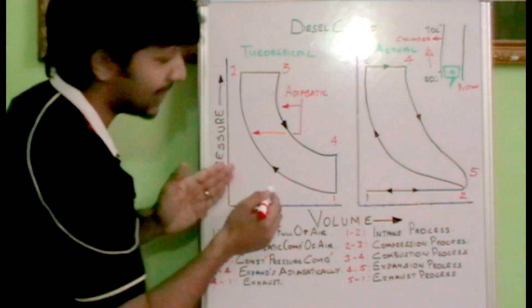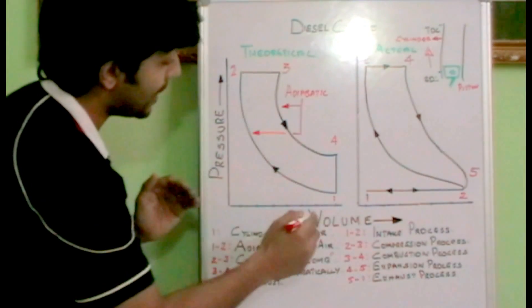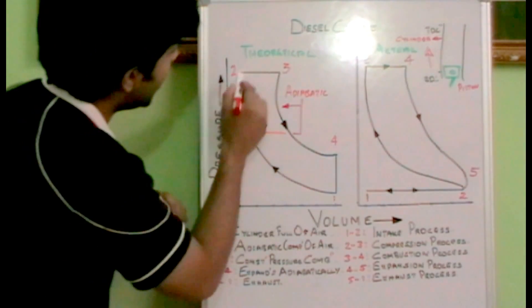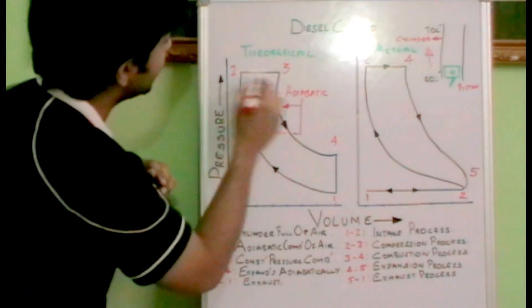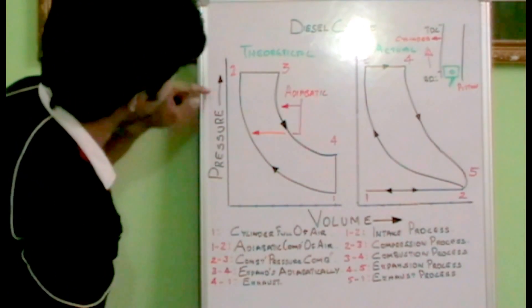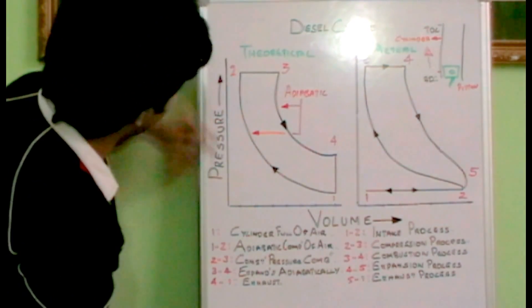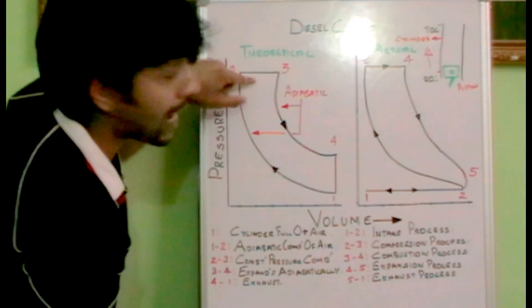No heat transfer is involved in this theoretical concept. In the second process, from 2 to 3, combustion of air is happening, and it is a constant pressure process. You can see the pressure is constant over here in 2 to 3, and the combustion happens there.